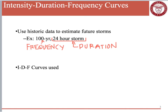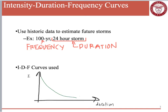One way we use this to predict future storms is to use an IDF curve. IDF curves have duration on the x-axis and intensity on the y-axis. To bring in frequency, we have multiple curves — for example, a green curve might be a 5-year curve, then a 50-year curve meaning once every 50 years, and then a 100-year curve.